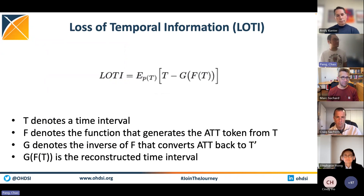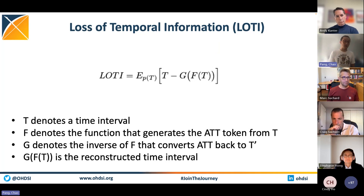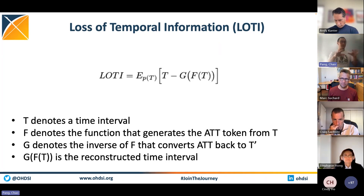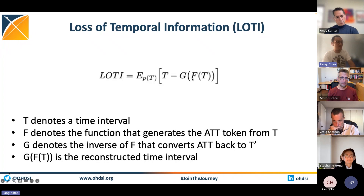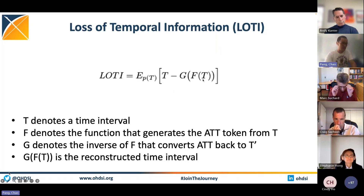I made the claim that the patient representation retained the patient timeline — although this makes intuitive sense based on the diagram I showed earlier, how do we actually measure it? To do this, we conceived a new metric, which we call Loss of Temporal Information, or LOTI, to describe the shrinkage in the patient timeline. In this equation, T represents the time interval, F is the function that generates the ATT token using the time interval, and G is the inverse function of F — so that term represents the reconstructed time interval. LOTI measures the expected difference between the time interval and the reconstructed time interval due to the use of the patient representation.